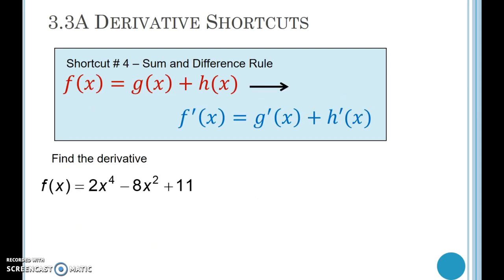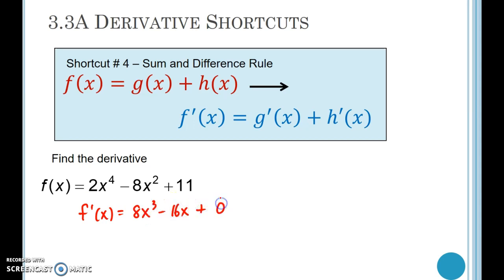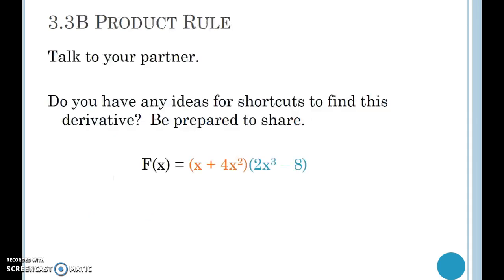The next shortcut explains why it's so easy to take derivatives of polynomials. If you have a sum or difference of two functions and you take the derivative, it's just the sum or difference of the derivatives. So for a polynomial, you just take the derivative of each piece using the power rule. For example, f'(x) would be 8x³ minus 16x plus 0 — the derivative of the constant is 0. The sum and difference rule is totally straightforward.